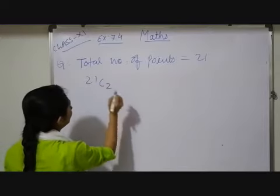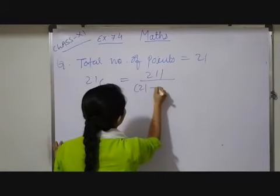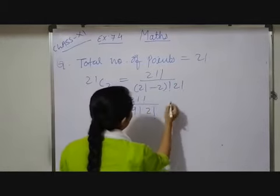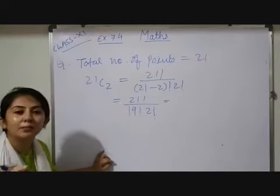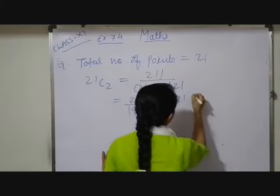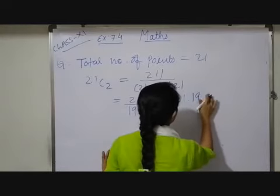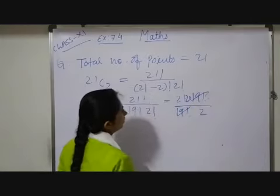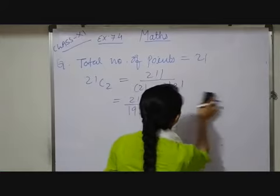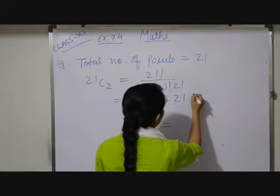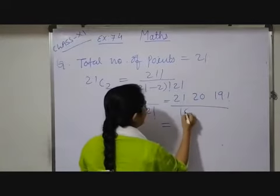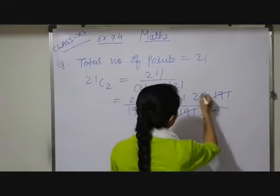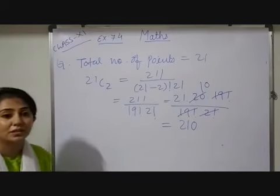So you will get 21C2, that is 21! divided by (21−2)! × 2!, which is 21! divided by 19! × 2!. Opening this up: 21 × 20 × 19! divided by 19! × 2. The 19! cancels out. Since 2! = 2, we can simplify: 21 × 20 divided by 2, giving us 21 × 10 = 210. So the answer is 210 chords.